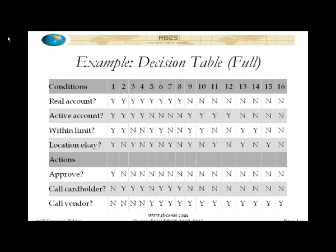That pattern has to exist for it to be a full decision table. This makes it easy to construct a decision table — if you know the conditions that apply, you put them in order. It can be any order you want, as to which condition comes first (like real account) and which comes last (like location OK). Then you build this pattern of yeses and nos: the top row has the first half of the columns as yes and the second half as no. Then the rate of change is twice as fast for the row below, and so on, such that the last row has alternation on every other column. It's a visually inspectable pattern that you can look at to satisfy yourself that all combinations are present.